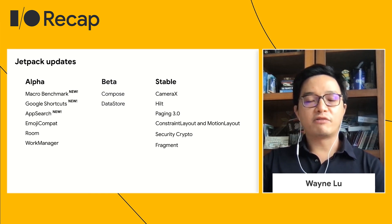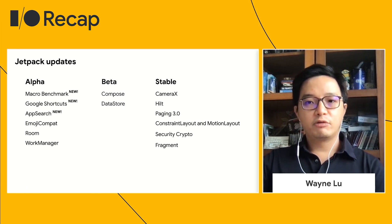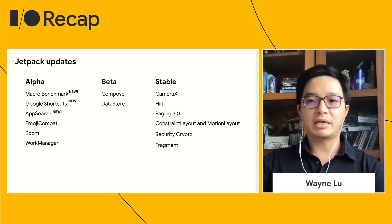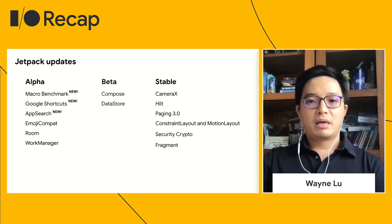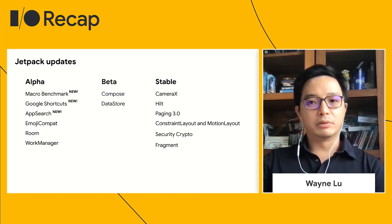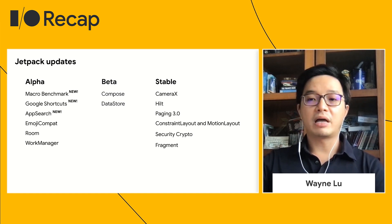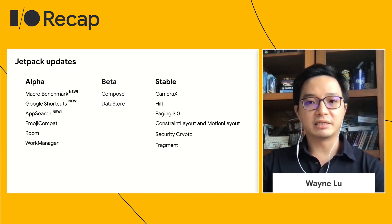Here's a quick summary of all the updates to Jetpack. We've categorized the APIs into alpha, beta, and stable. Alphas are libraries under active development. Features may be incomplete, however, everything is tested and highly functional.